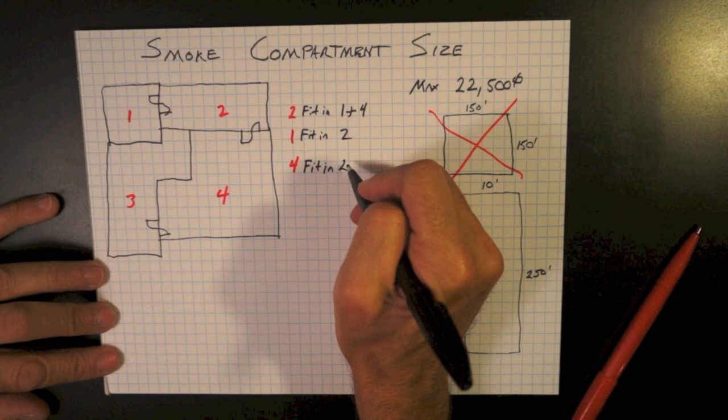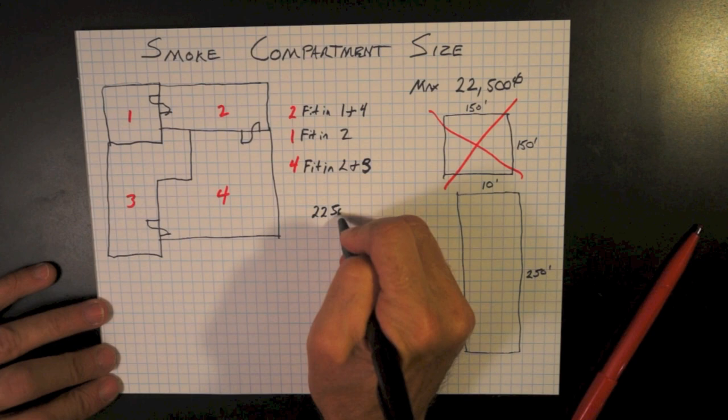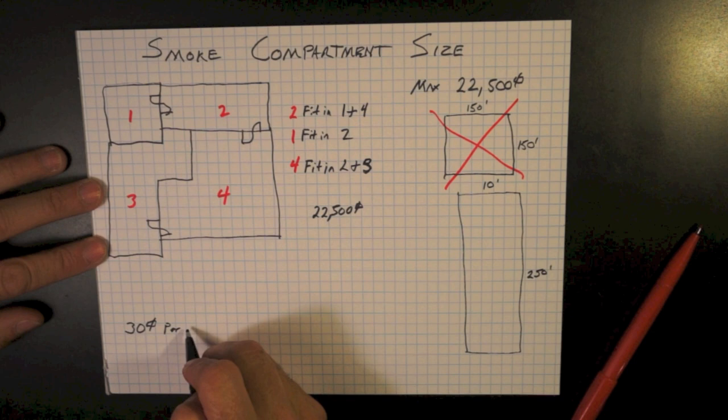With Smoke Compartment 4, we have communicating doors between 4 and 2 and communicating doors between 4 and 3. So let's assume 22,500 square feet for Smoke Compartment 4.